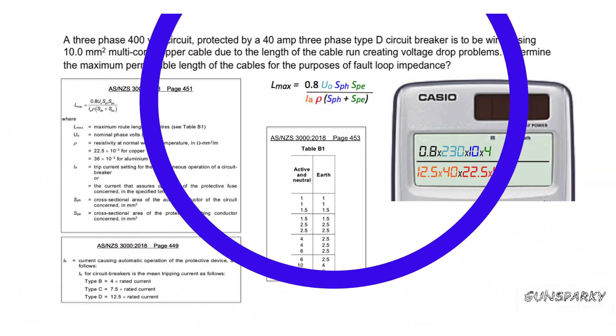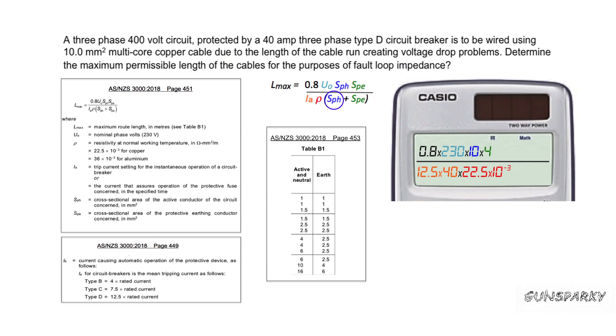The final step is to add the cross-sectional area of the active conductor to the cross-sectional area of the earthing conductor, which we worked out before to be 10 for the active conductor and 4 for the earthing conductor.